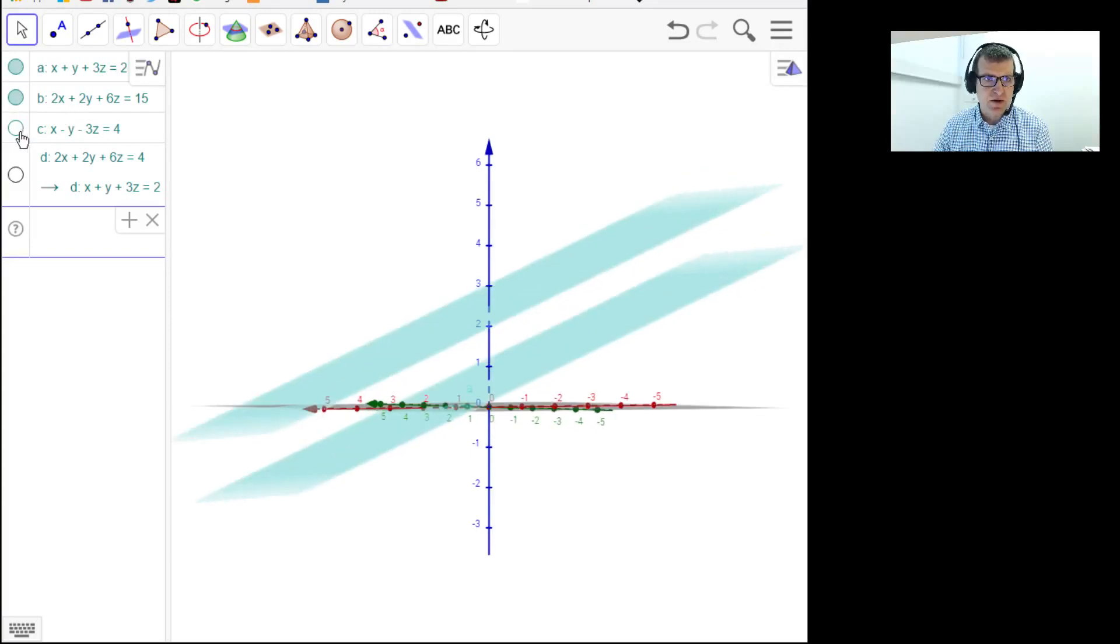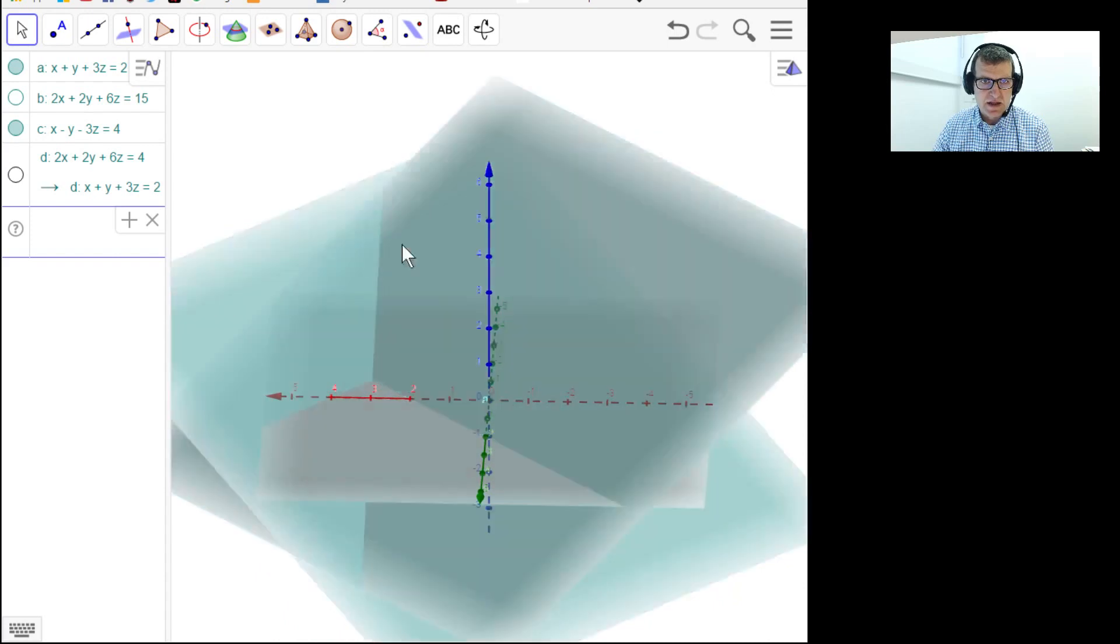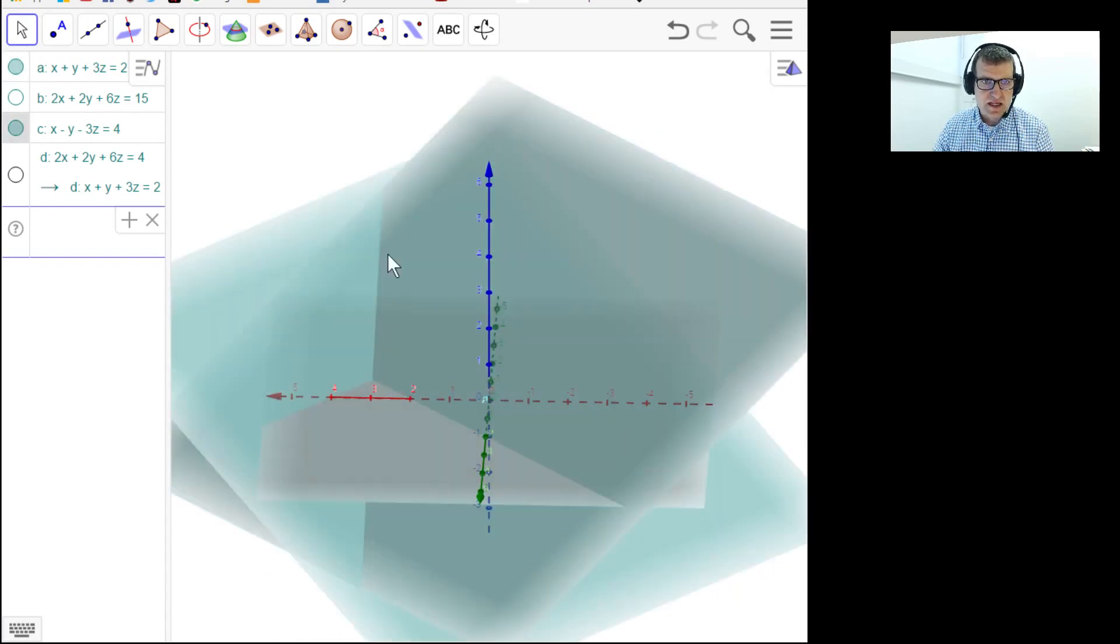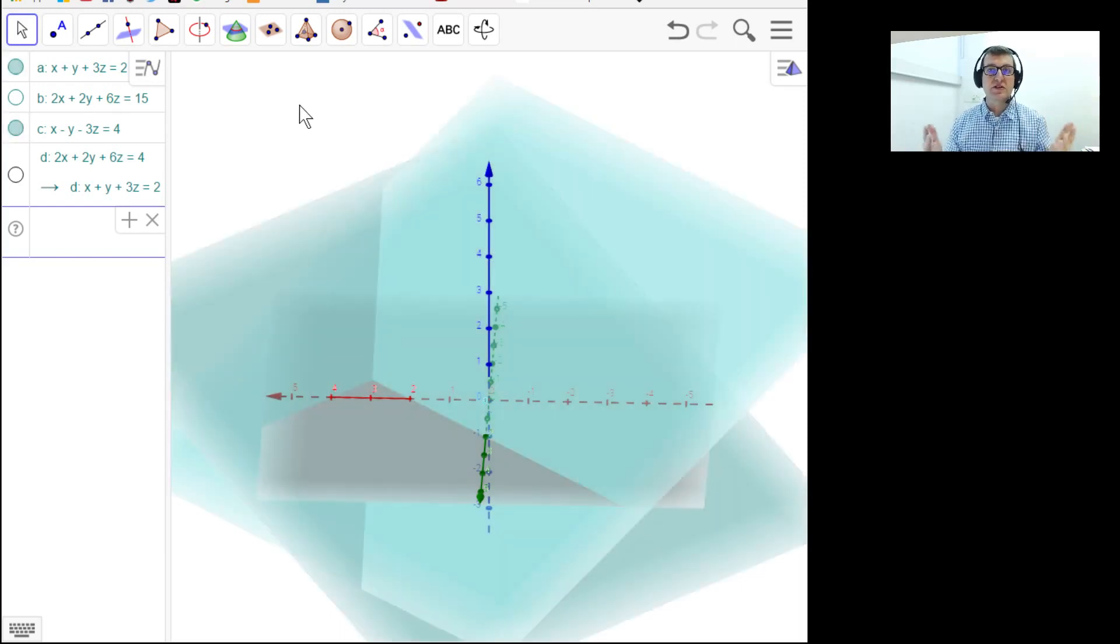So this linear system has no solution. So if I take that one off, and put this one in, you can see these two planes do intersect along this line. So there are an infinite number of points on a line. So there are an infinite number of solutions to this problem. So this would be the second case. The two planes intersect along a line.